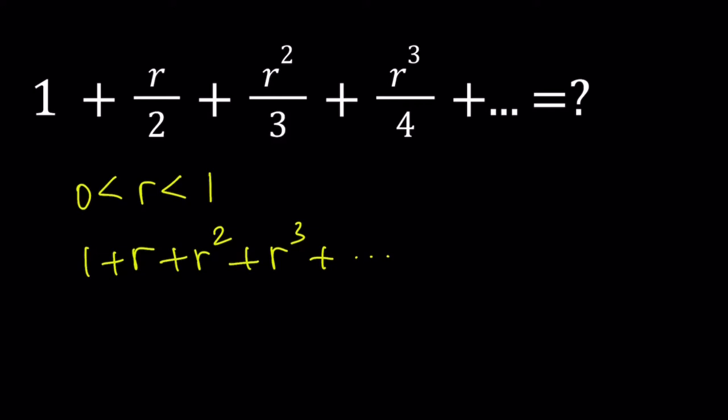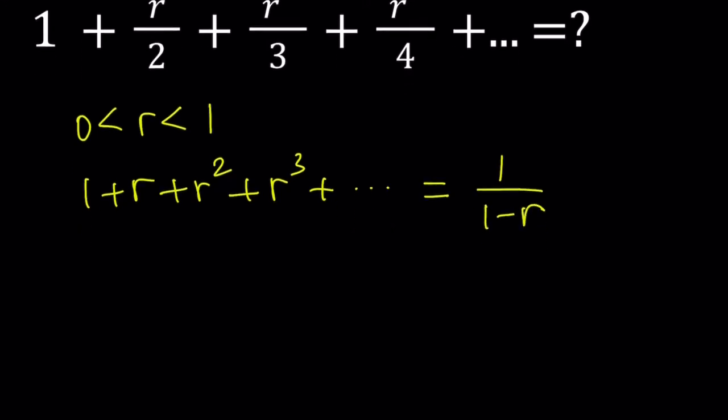r is between negative 1 and 1, but they're not included. Our sum is going to converge. And this is the famous infinite geometric sum, and this can be written as 1 over 1 minus r, if r satisfies those properties.